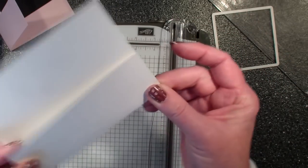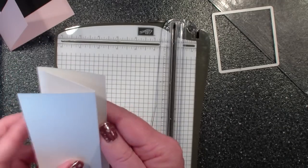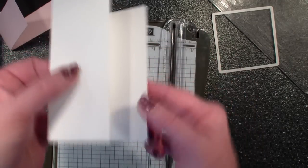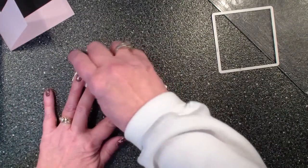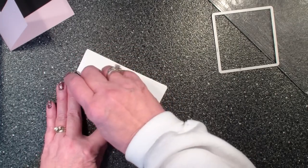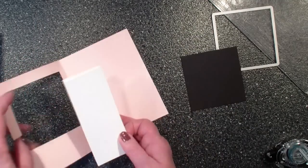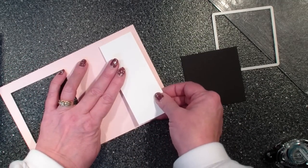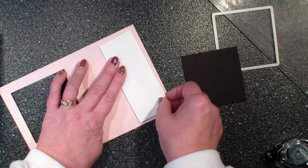So then I'm going to go valley fold mountain fold. I am going to place adhesive on this back piece. Now if you really want it to be strong you can use your sticky strip or your fast fuse but because of the video I'm just going to be using my snail and then you just take that and lay it right inside your card like that.